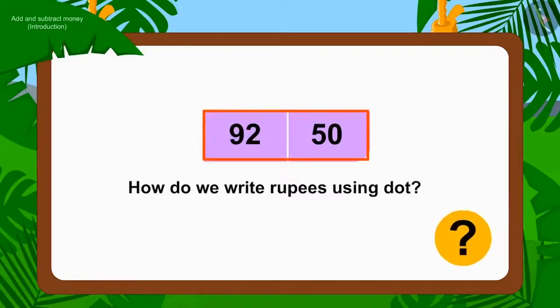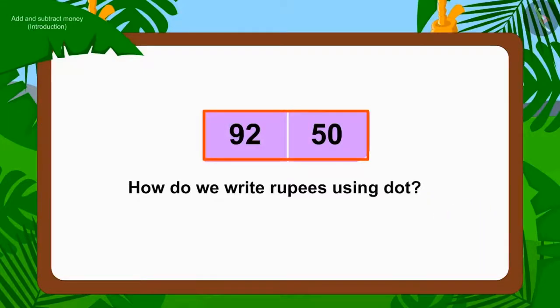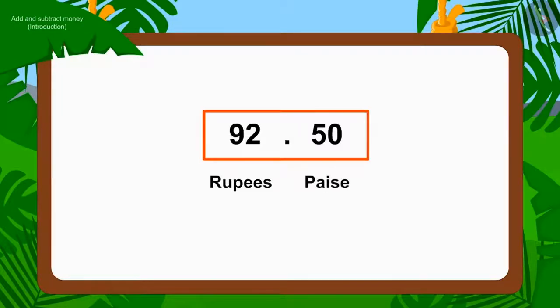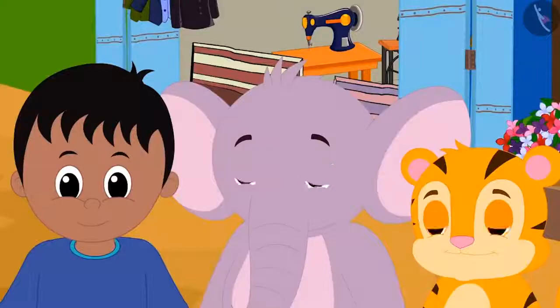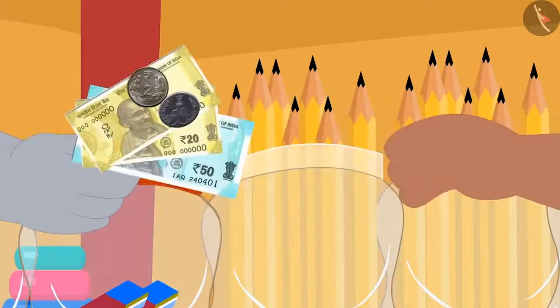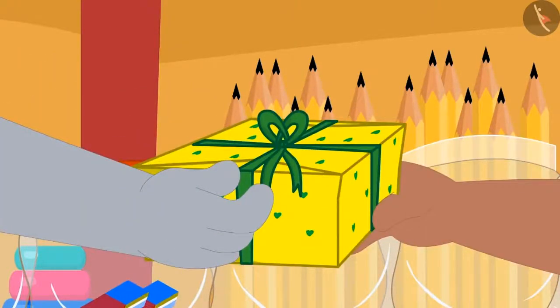How do we write this using a decimal point as Rupees? To the left of the point, we write the number of Rupees and to the right, we place Paise. The three together paid the price of the hat and pencil and bought the gift.